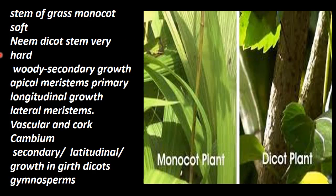Stems of grass and monocots are soft, whereas the neem tree is very hard and woody. In woody structure plants, this woody structure is because of secondary growth.